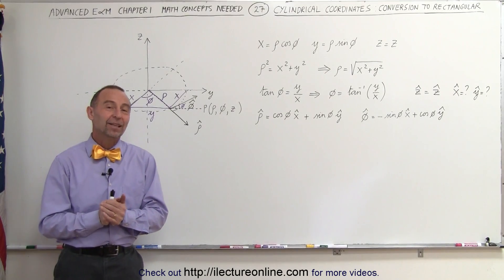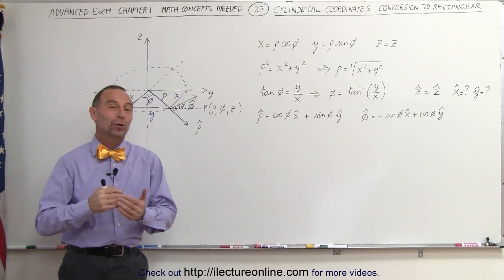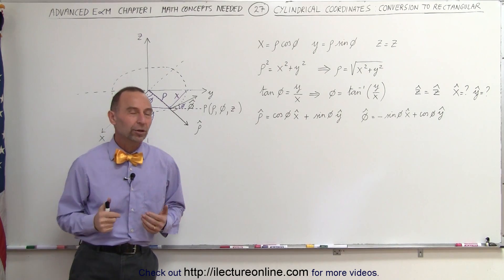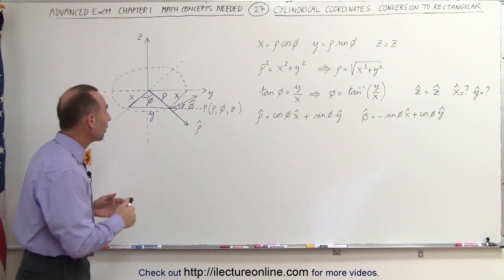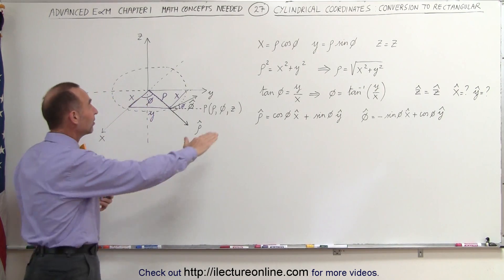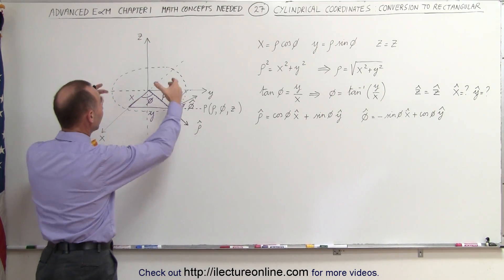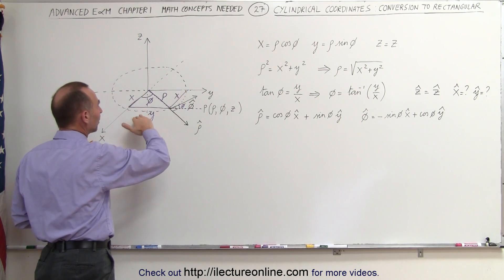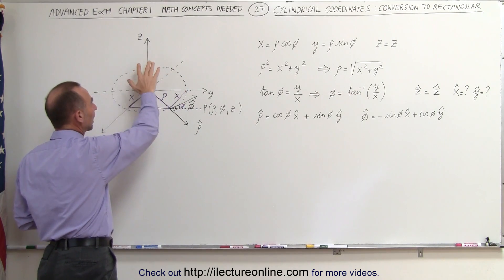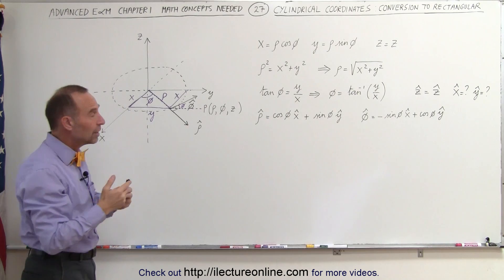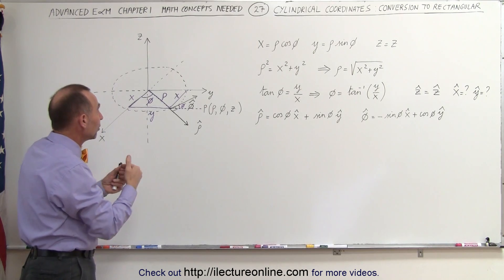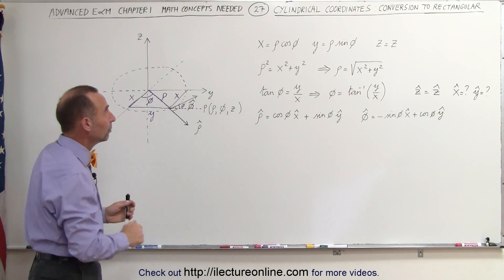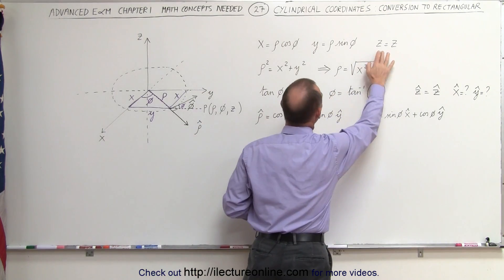Welcome to ElectronLine. In this video we're going to learn how to convert from cylindrical to rectangular coordinates. What we've done here is simply taken a slice of a cylinder. On the cross section of the slice, in the z direction the polar and cylindrical coordinates have the same z, so we don't have to worry about it. We can say that z equals z.